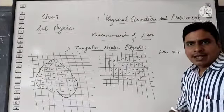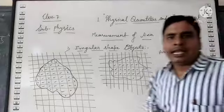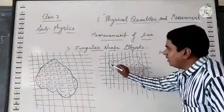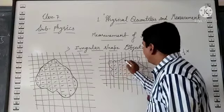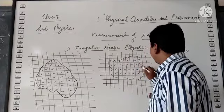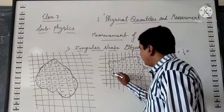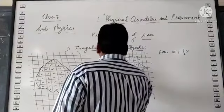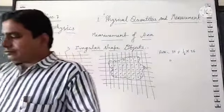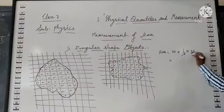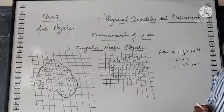Area equals 22 plus half times the number of incomplete square blocks. Now count the incomplete squares: 1, 2, 3, 4, 5... continuing the count... 22, 23, 24, 25, 26. So there are 26 incomplete squares. So it's 22 plus 13, which equals 35 centimeter square. Clear?